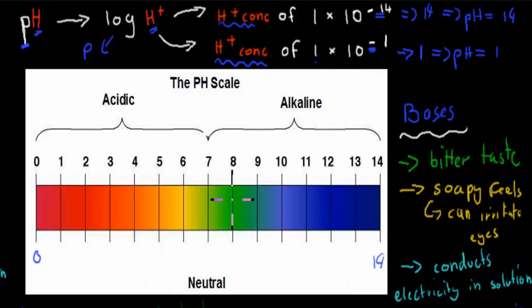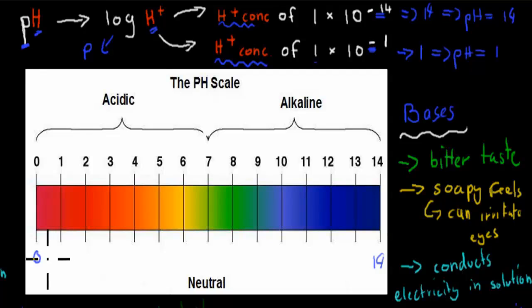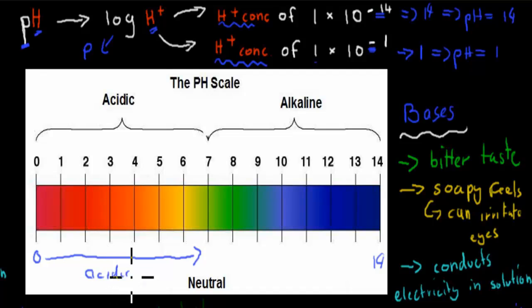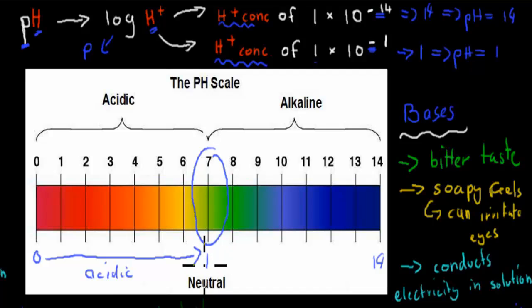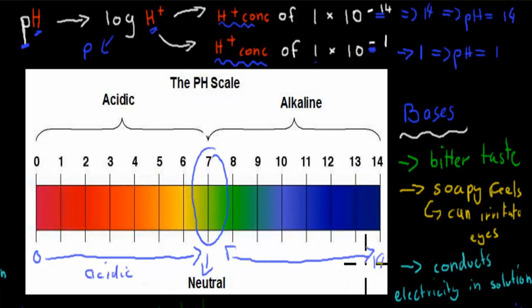So for the pH scale, anything from 0 up to just below 7 — roughly 0 to 6.5 — is considered acidic. A pH of 7 is considered neutral, and above 7 up to 14 is considered basic, or another word for that is alkaline.